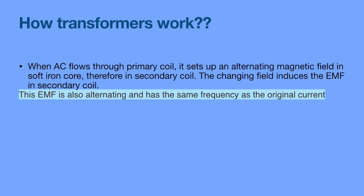To remember the process: in the primary coil, AC current flows, which causes an alternating — or changing — magnetic field in the soft iron core. Then this changing magnetic field causes an EMF in the secondary coil.